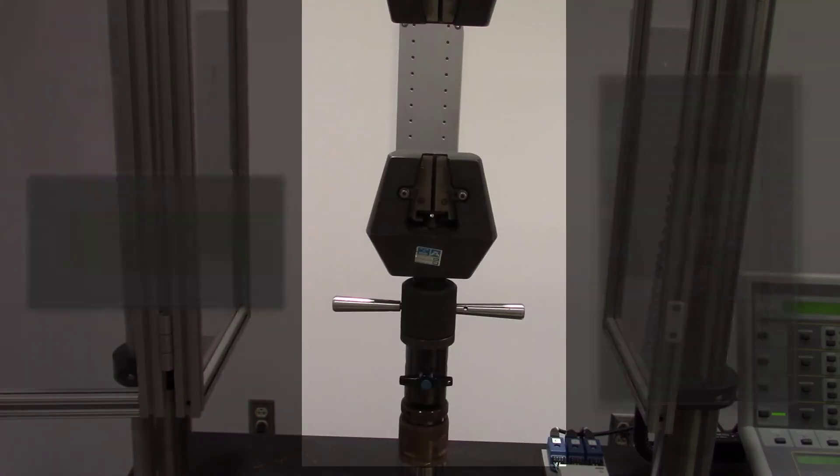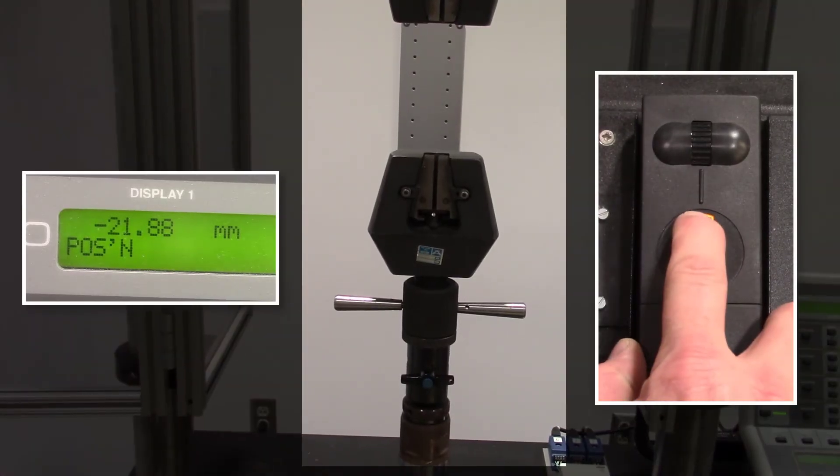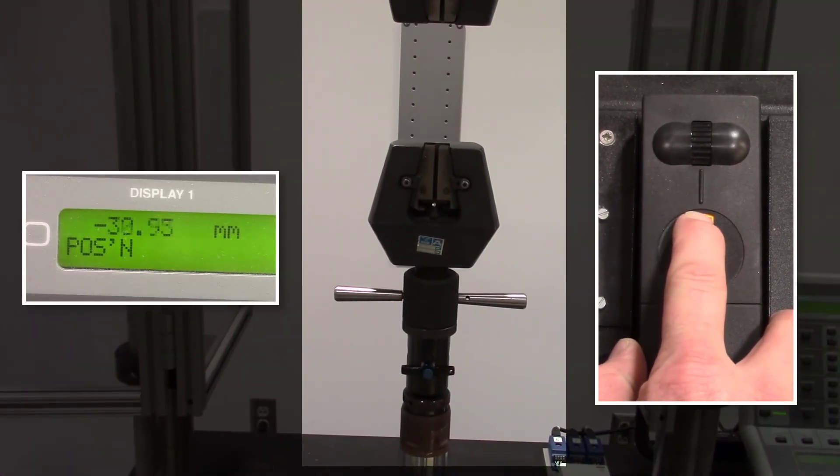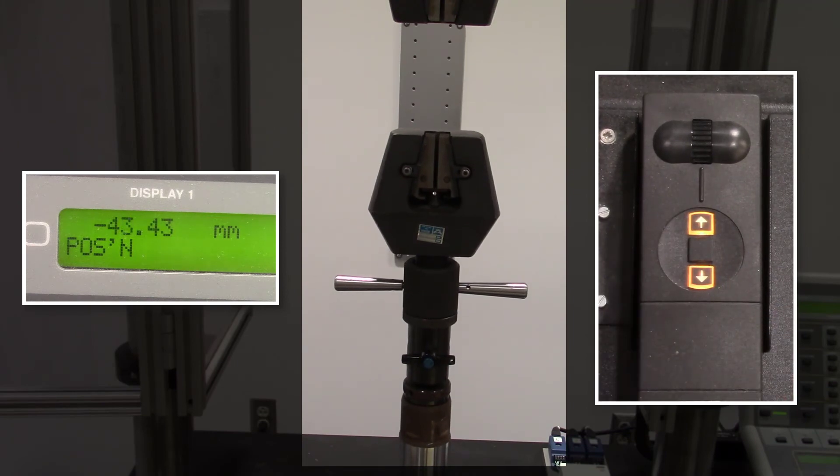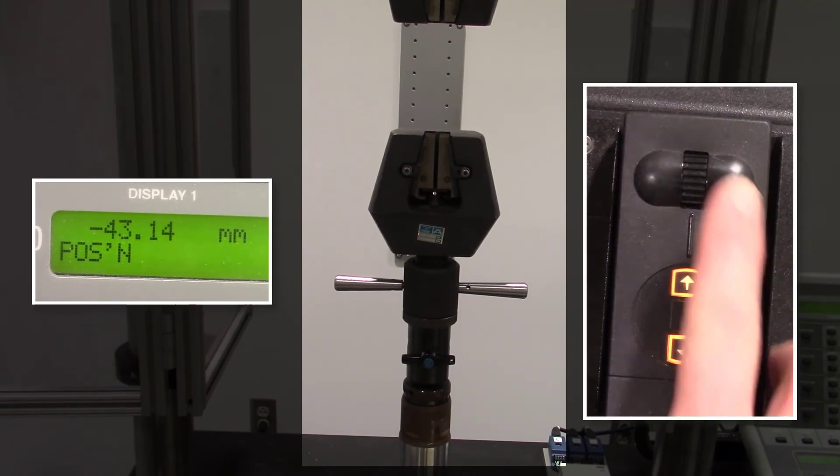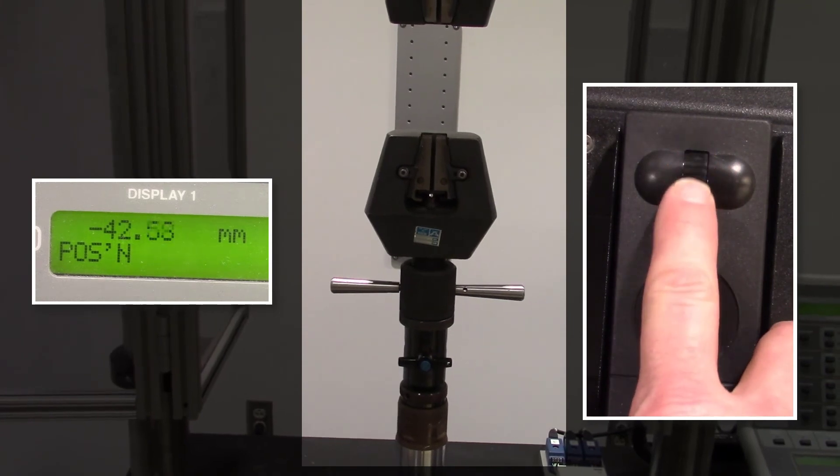Jog the RAM to the starting position of negative 40 mm using the control wand. The up-down buttons are for coarse movement while the thumb wheel allows for fine adjustment of the RAM position. Try to get as close to negative 40 mm as possible.